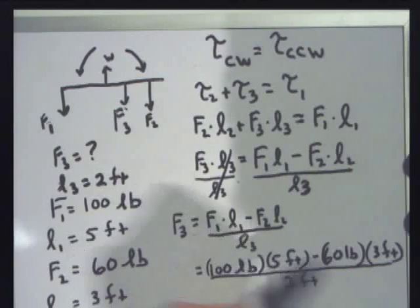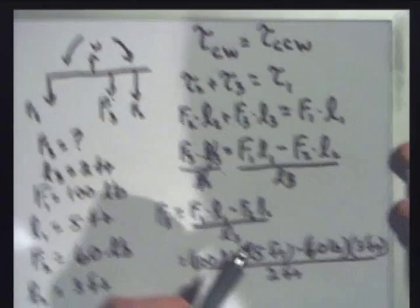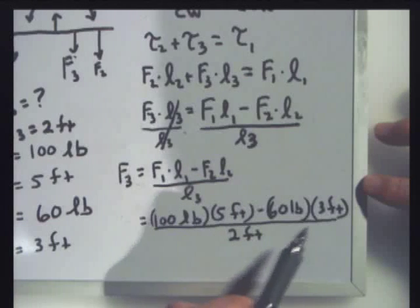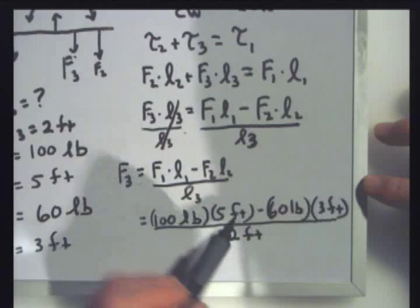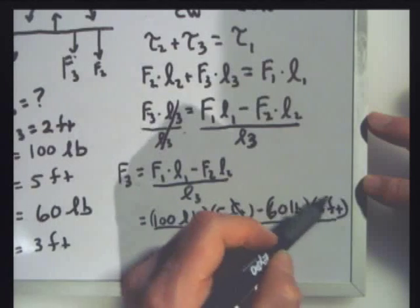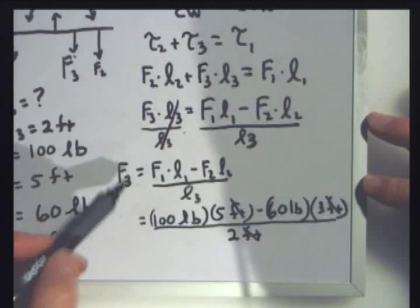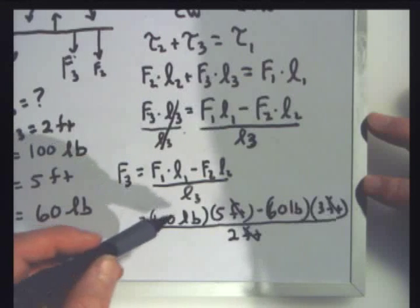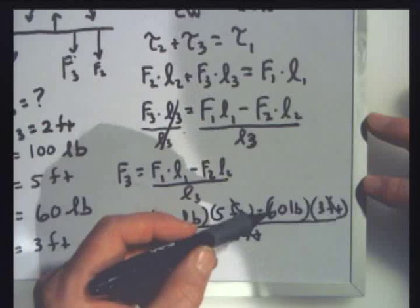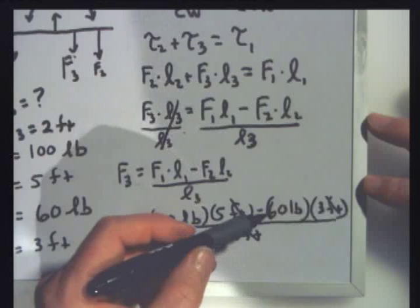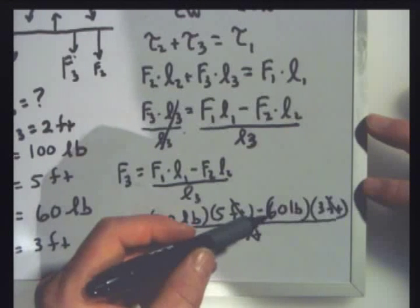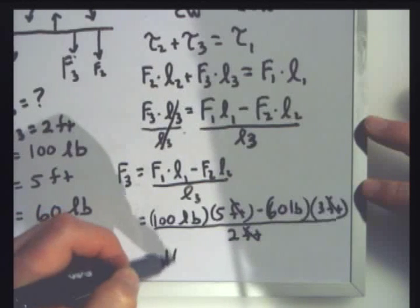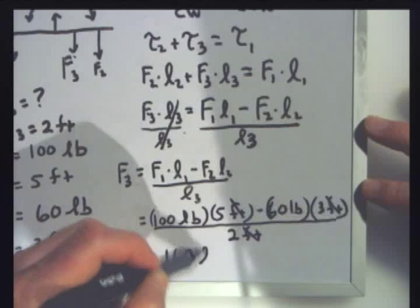Now, I got feet and feet over here. Feet here, feet here, and they're subtracted. I could factor out these feet so they can both cancel with the feet below. And I'll wind up with pounds, which is great. That's what I'm looking for. So this would be, let's see, 500 minus 180 would be 320 divided by 2. That's going to be 160 pounds.